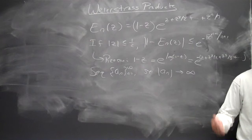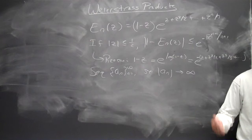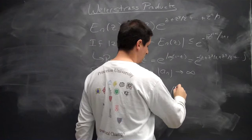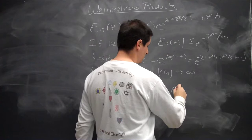Why do I need to assume the a_n's are going off to infinity? No accumulation points. If the a_n's were not going off to infinity, I'd have an accumulation point and the function would be identically zero. So we study something of the form z^l times the product from n=1 to ∞ of E_n(z/a_n).